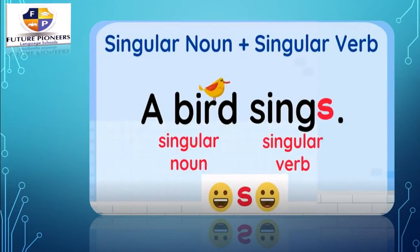We have something very important to know. Any singular noun plus singular verb — we have to add S to the verb. In a singular noun plus singular verb, we add S to the verb. Like 'a bird sings.' A bird sings.